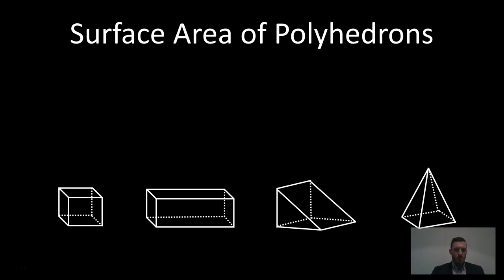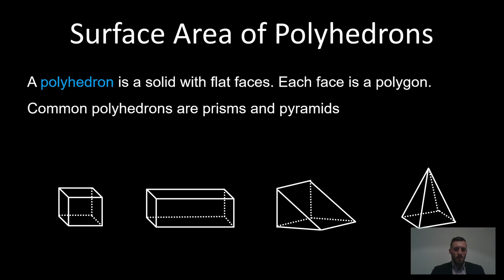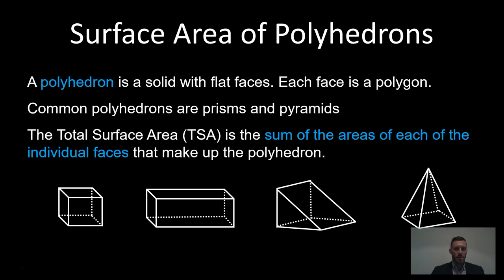A polyhedron is a solid with flat faces that are polygons. Common polyhedrons are prisms and pyramids. The total surface area is the sum of the area of each of the individual faces of the polyhedron. We've got some examples down the bottom.